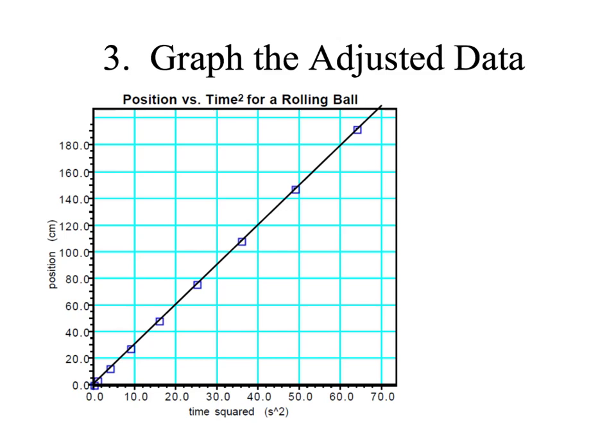In step three, we're going to graph the adjusted data. If you compare this graph to the original graph, you'll see that the main difference is that we have put now time squared on the X axis. So every point that we've plotted here is time squared as the X coordinate and position as the Y coordinate. And you'll see, if you've done this step correctly, that your graph will be a straight line.